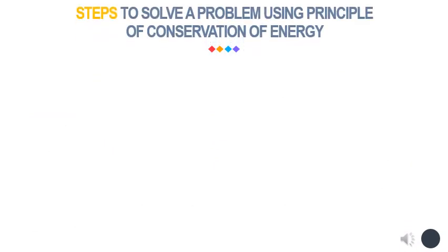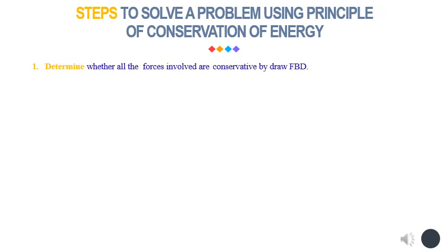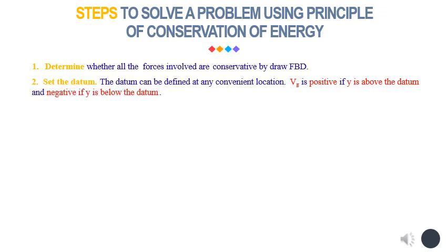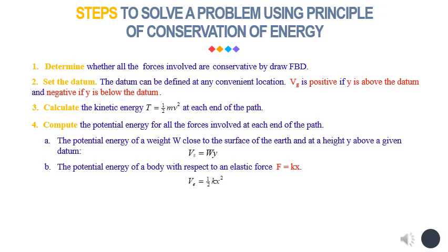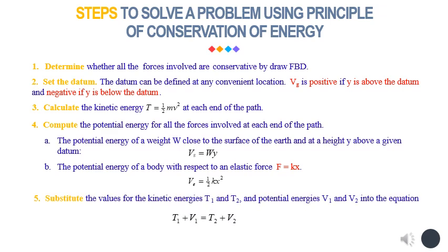To solve a problem using the principle of conservation of energy, follow these steps. First, determine whether all the forces involved are conservative. Next, set the datum — it can be defined at any convenient location; Vg is positive if y is above the datum and negative if y is below. Next, calculate the kinetic energy at each end of the path. Then, compute the potential energy for all forces involved at each end of the path, such as the potential energy of a weight W at height y above the datum, or the potential energy of a body with respect to an elastic force F equals kx. Finally, substitute the values for kinetic energies T1 and T2, and potential energies V1 and V2 into the equation.